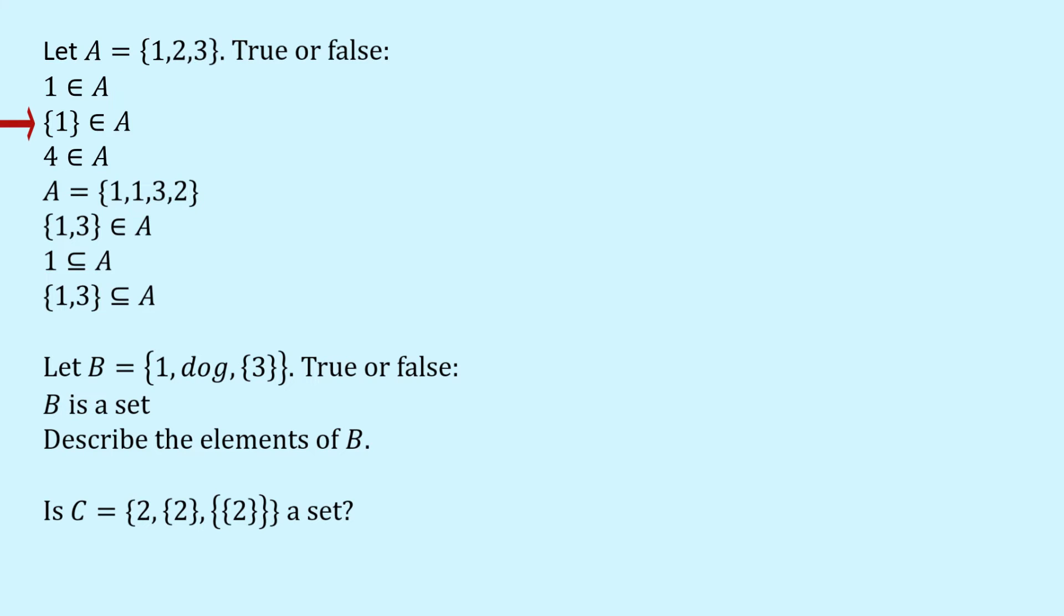What about this statement? The set {1} is an element of A. Well, A only contains three elements the numbers 1, 2 and 3 and so the set containing the number 1 is certainly not an element of A and so this is false.